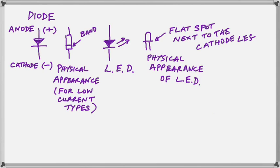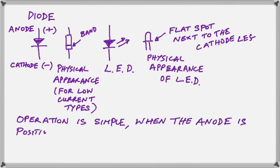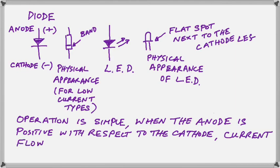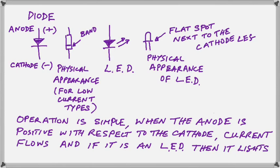Now, why do we need to know the difference between the cathode and the anode? Because of the operation of it. When the anode is more positive than the cathode, current will flow. When the anode is negative with respect to the cathode, current will not flow. And if it's an LED, if current flows, you get light. If no current flows, you get no light.